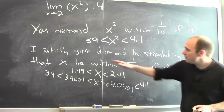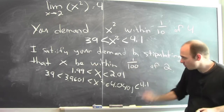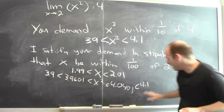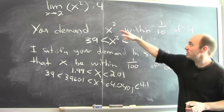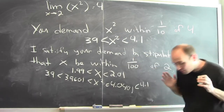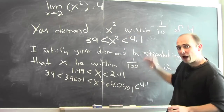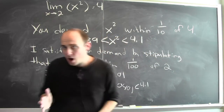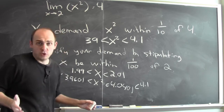Demanding that x be within a hundredth of 2 forces x squared to be between 3.9 and 4.1 — in other words, it forces x squared to be within a tenth of 4. So if your demand is that x squared be within a tenth of 4, I can satisfy that demand by simply requiring x to be within a hundredth of 2.